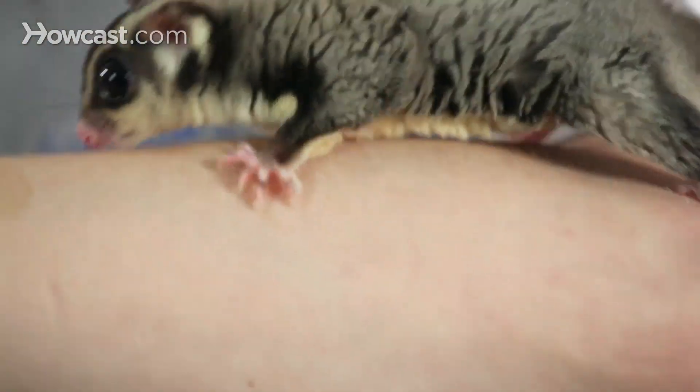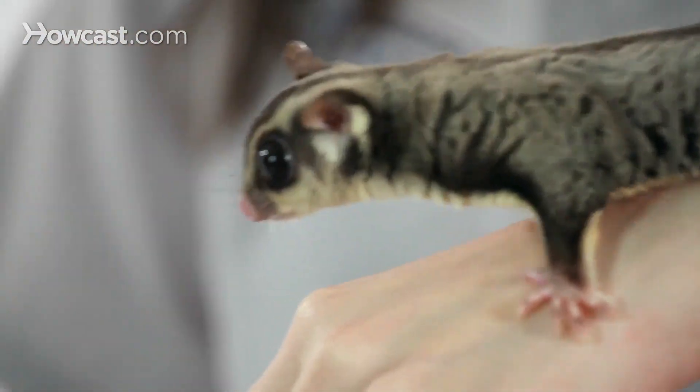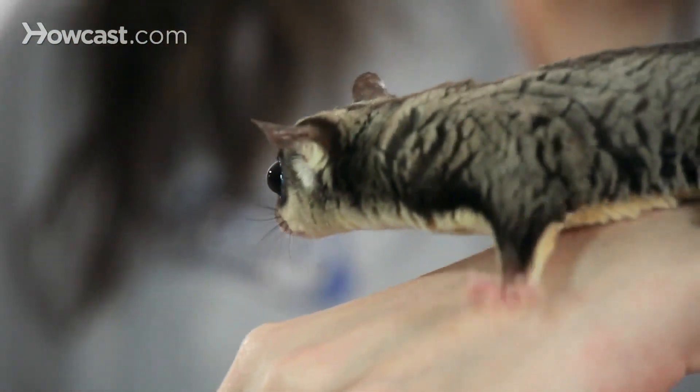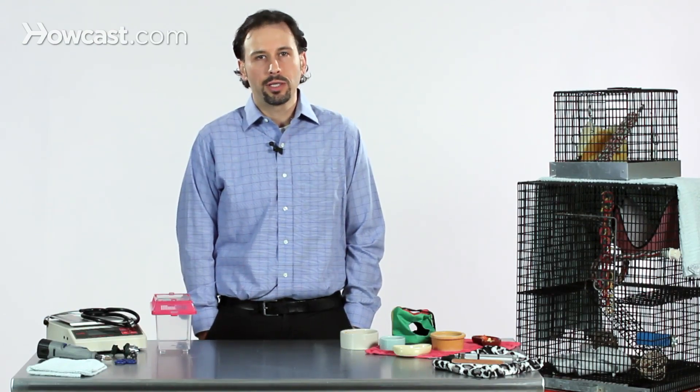A lot of people will hear the term referred to when a breeder may say, oh my female has four joeys. It's just a general term that is used in reference to a young sugar glider.